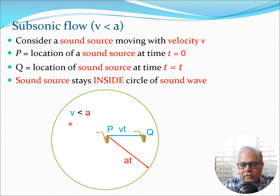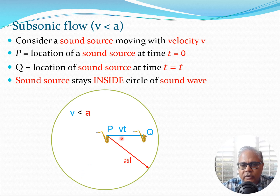Now in the same time the sound has moved the distance at. So the sound wave has moved the distance at, and the circle essentially formed by at is the boundary kept by the sound wave. So if you are within this particular circle you can hear this trumpet from this point — this is the maximum distance the sound wave can travel in time t. Now what you can see clearly here is that if you are traveling at a velocity lower than the speed of sound, you are going to be inside this circle. So the sound source stays inside the circle created by the sound wave.